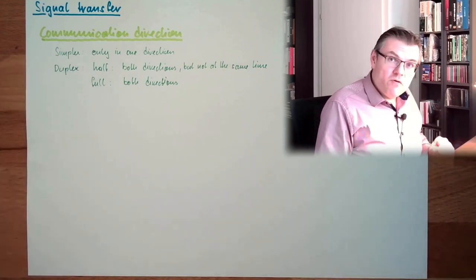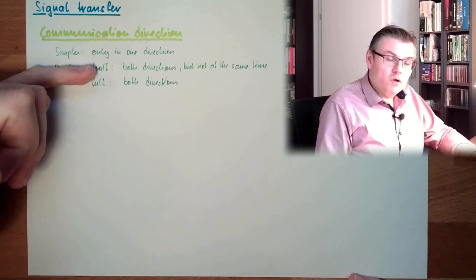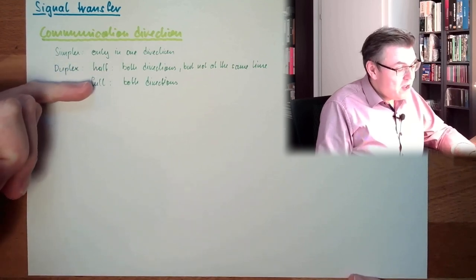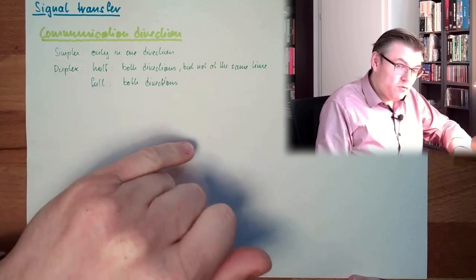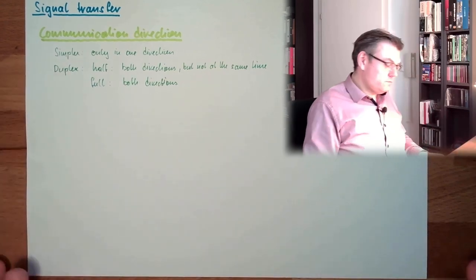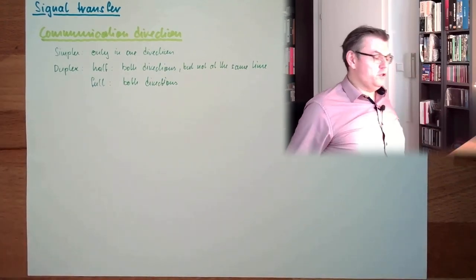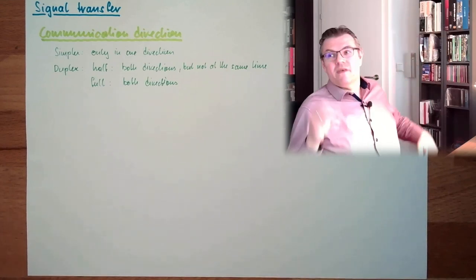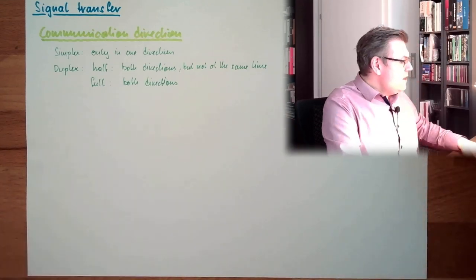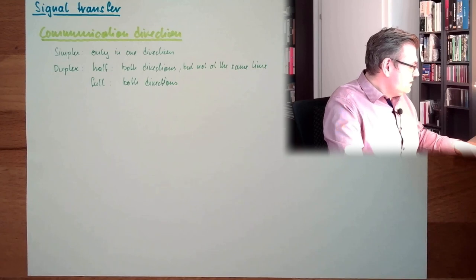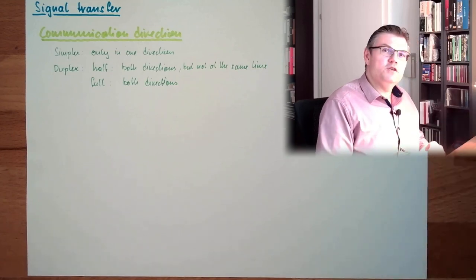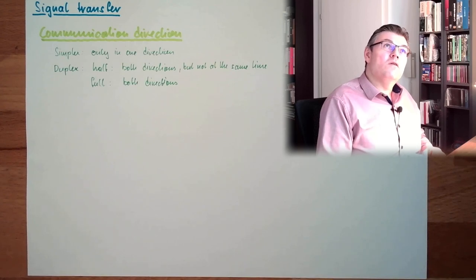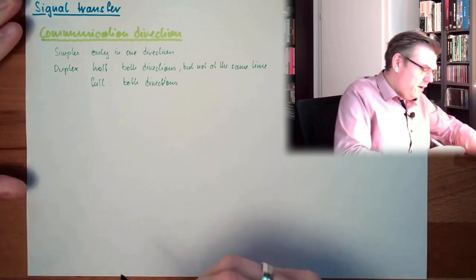Here they can share one single line. Here they have to have at least two lines, two communication lines. One in this direction, one in this direction. Communication direction. And I already said something about lines. There is the connectivity or the communication line.